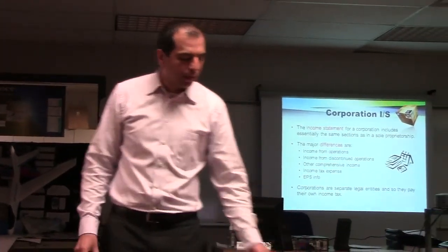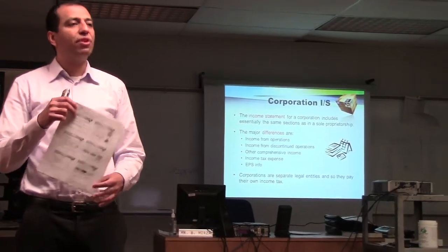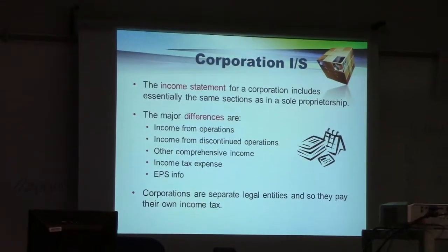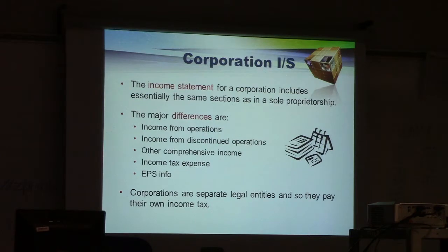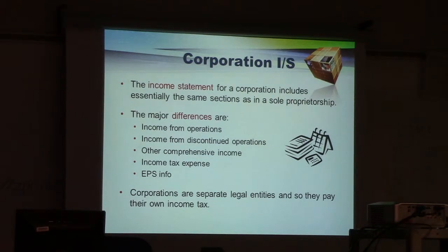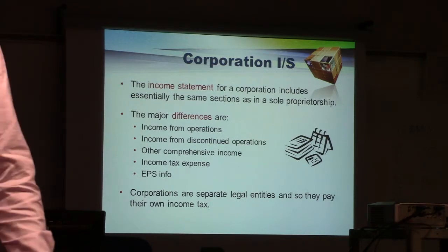As you can see from this slide, the corporation's income statement is a bit different than the income statement that you've been used to in the past, which is for sole proprietorships. The major differences are that you have these headings: income from operations, income from discontinued operations, other comprehensive income (OCI), income tax expense, and EPS info. A proprietorship does not pay income tax. A corporation is a third-party entity, and that's why it pays its own corporation's income tax.